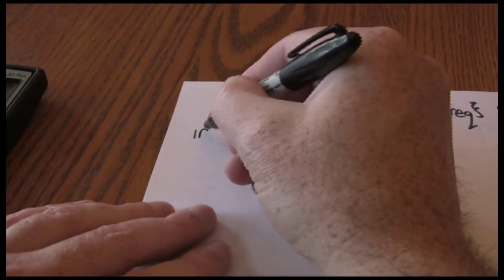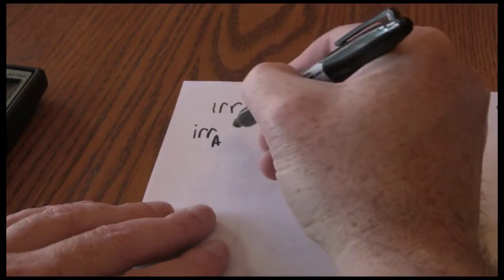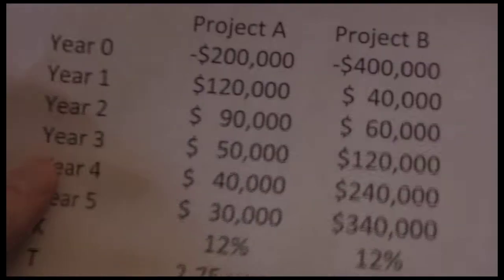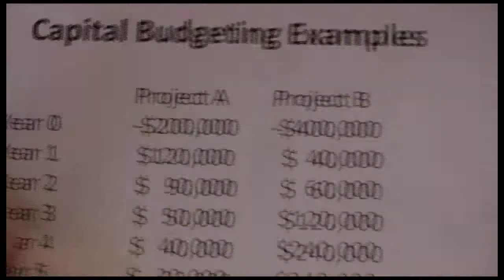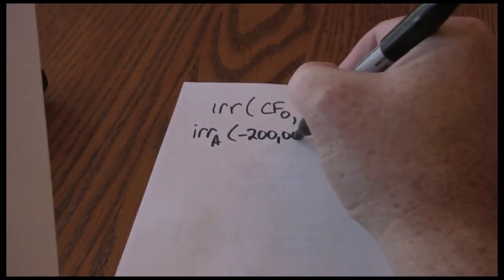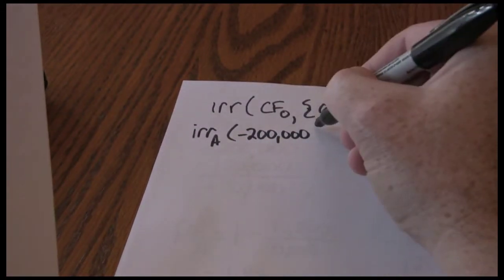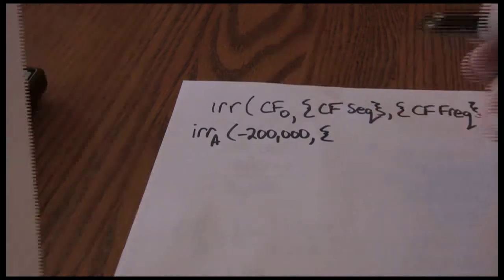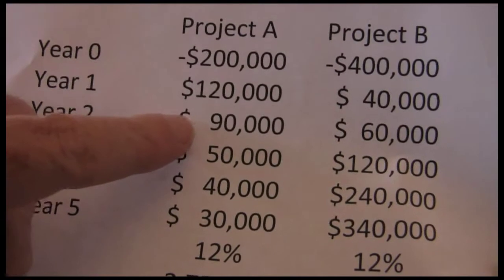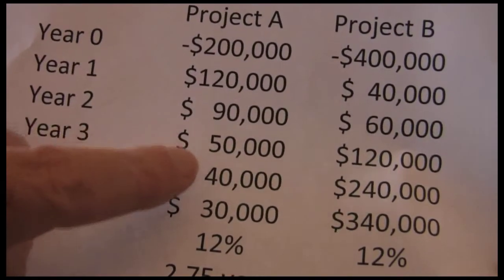So when we calculate the internal rate of return for project A, our CF-0 is negative 200,000. And our cash flow sequence: $120,000, $90,000, $50,000, $40,000, $30,000.